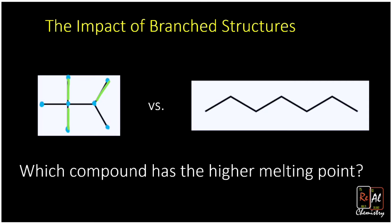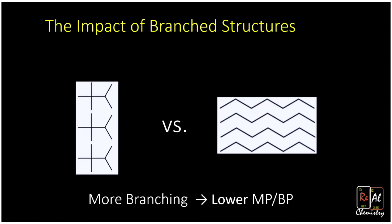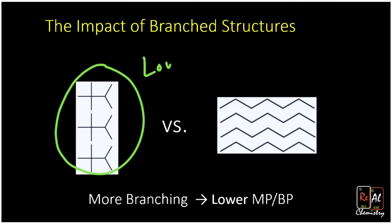We need to think about how they stack relative to each other. The branched structure doesn't have many points of contact — they connect only at a few spots. Thinking of these as being dipped in glue, there are very few points where they can actually be glued to each other. That contrasts with our stack of heptane, where they can be connected all along the chains, making dispersion forces much stronger. Branch structures stack less tightly, decreasing the intermolecular forces. As a consequence, more branching leads to a lower melting point or boiling point.